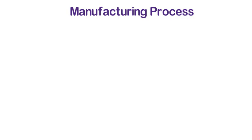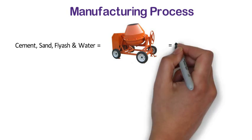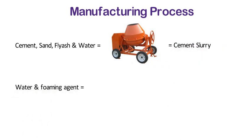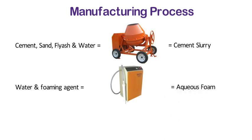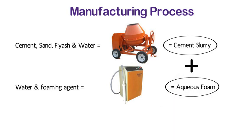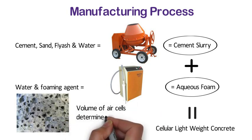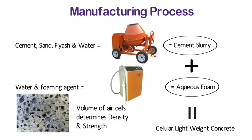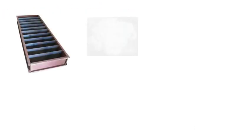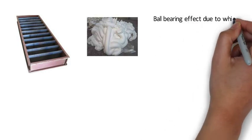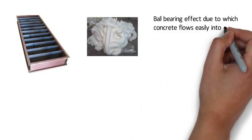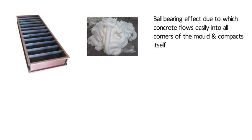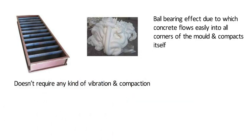Now let us understand how CLC blocks are manufactured. Cement, sand, fly ash and water are mixed in a concrete mixer to form a cement slurry. Water and foaming agent are mixed in a foam generator to form an aqueous foam. After that, cement slurry and aqueous foam are mixed together in a concrete mixer to form cellular lightweight concrete. The volume of air cells in the foam concrete determines the density and strength. The mixture is poured into assembled moulds of blocks. The foam creates a ball bearing effect due to which the concrete flows easily into all corners of the mould and compacts itself, hence it doesn't require any kind of vibration and compaction.